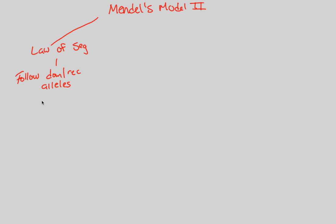In order to follow the dominant and recessive alleles, you have to look at genotypes. Genotypes, as opposed to phenotypes, are the genes — the genetics. Think 'geno' for genetics as opposed to 'pheno' for physical. We're looking at the specific alleles and how they relate to each other in terms of dominant versus recessive, and there are different ways to categorize this when looking at genotypes during the law of segregation.